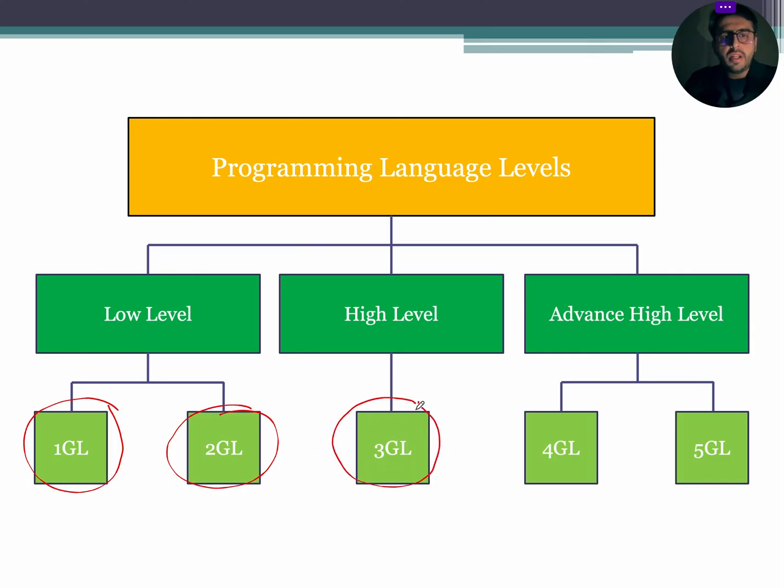High level language is the third generation of programming language and is machine independent. It contains a set of instructions written in simple English to instruct a machine. A high level language program requires translation to machine language. This translation is accomplished by a computer program known as compiler.